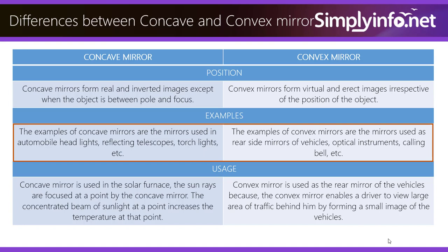Whereas a convex mirror is used as the rear mirrors of the vehicles because the convex mirror enables the driver to view larger area of traffic behind him by forming a smaller image of the vehicles.